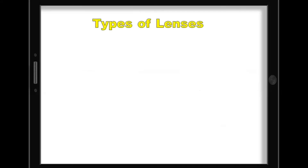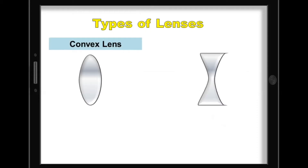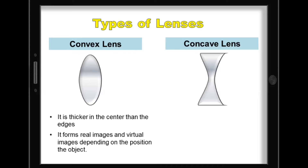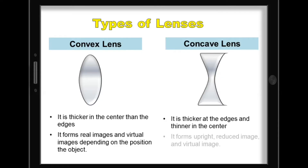There are two common types of lenses: convex lens and concave lens. For convex lens, it is thicker in the center than the edges. It forms real images and virtual images, depending on the position of the object. For concave lens, it is thicker at the edges and thinner in the center. It forms upright, reduced image, and virtual image.